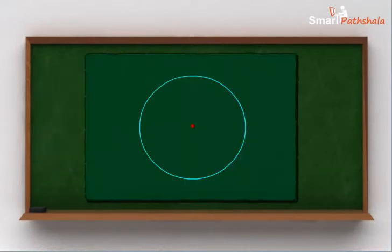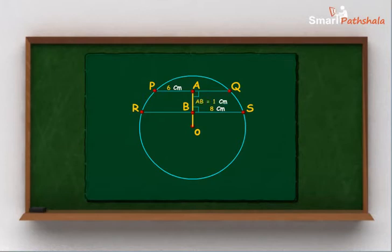Example B: PQ and RS are two chords on same side of a circle such that PQ is equal to 6 cm and RS is equal to 8 cm and PQ is parallel to RS. OA and OB are perpendicular on PQ and RS respectively. If AB is equal to 1 cm, find the radius of the circle.